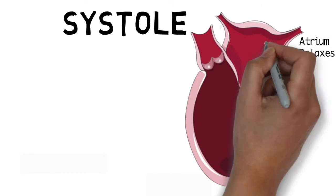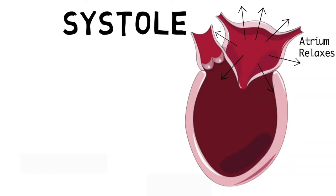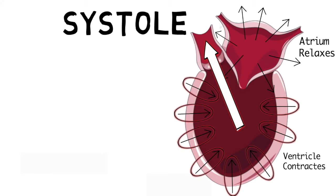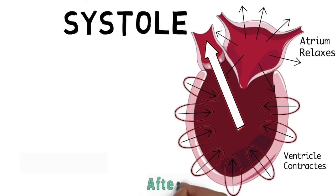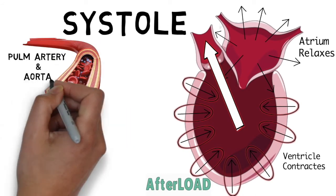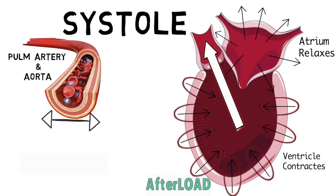In the systolic phase, the atrium relaxes and the ventricle contracts to push the blood out. The force that it needs to contract to push the blood out is called afterload. The afterload is affected by the diameter of the pulmonary arteries and the aorta.